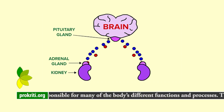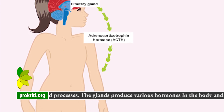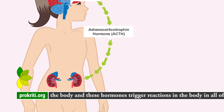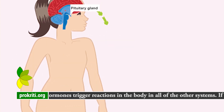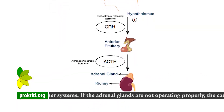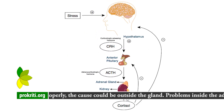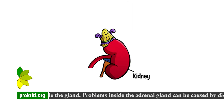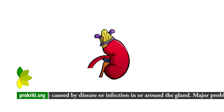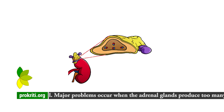Adrenal glands are responsible for many of the body's different functions and processes. The glands produce various hormones in the body, and these hormones trigger reactions in all of the other systems. If the adrenal glands are not operating properly, the cause could be outside the gland. Problems inside the adrenal gland can be caused by disease or infection in or around the gland. Major problems occur when the adrenal glands produce too many or too few hormones.